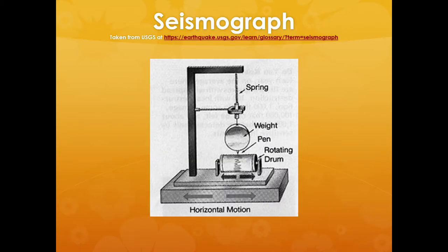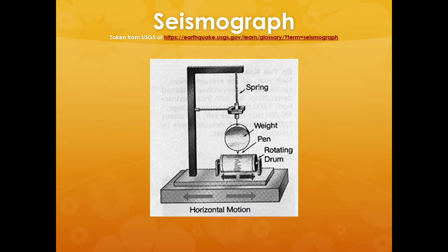The seismographs we use today operate on this principle: a weight hanging from a spring, freely floating, with a rotating drum below it that has a piece of paper on it. When nothing's happening, the line on that rotating drum would be straight. But when the base of the device starts to shake, the base moves around while the weight essentially stays in place due to inertia. That relative motion creates squiggles on the rotating drum, and the size of those squiggles tells us how intense the earthquake is.